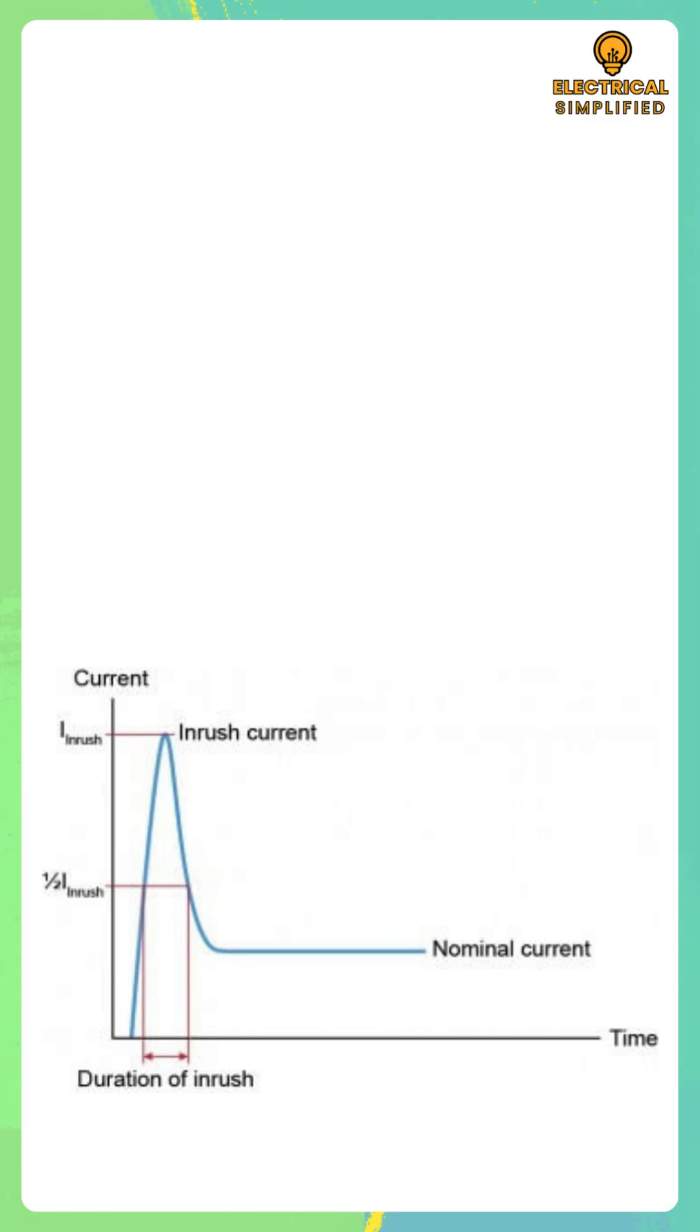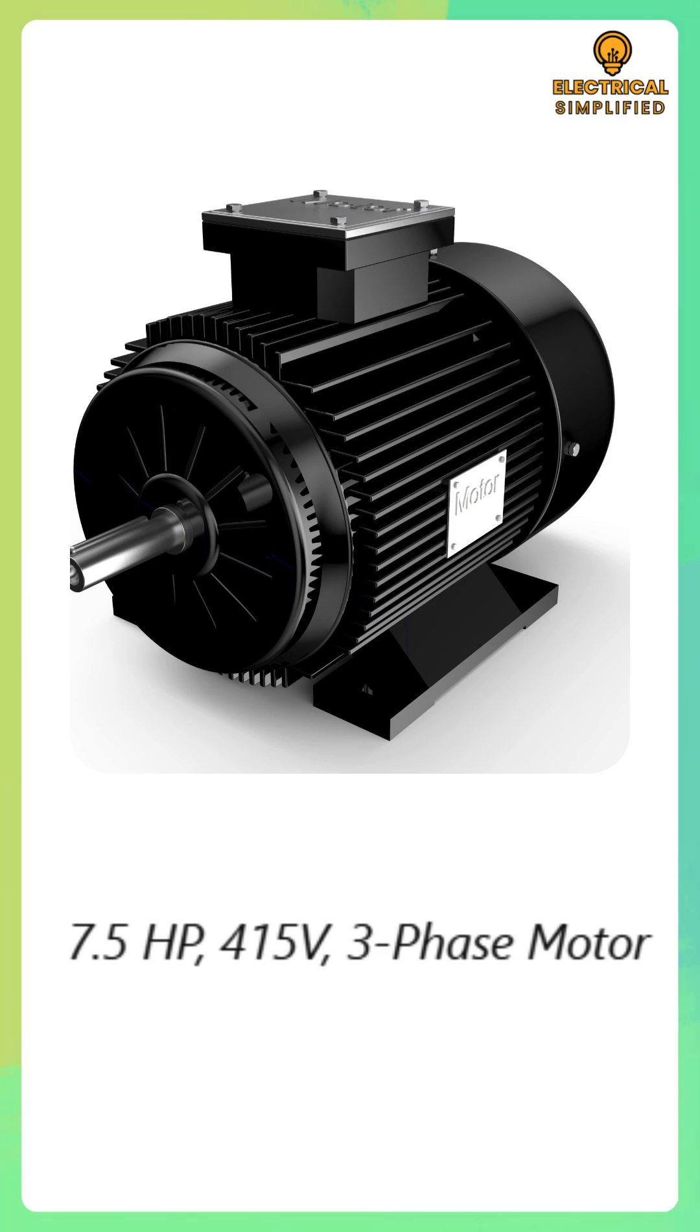In this video, we'll learn how to calculate the starting current for a 7.5 horsepower, 415 volt, three-phase motor, step-by-step.